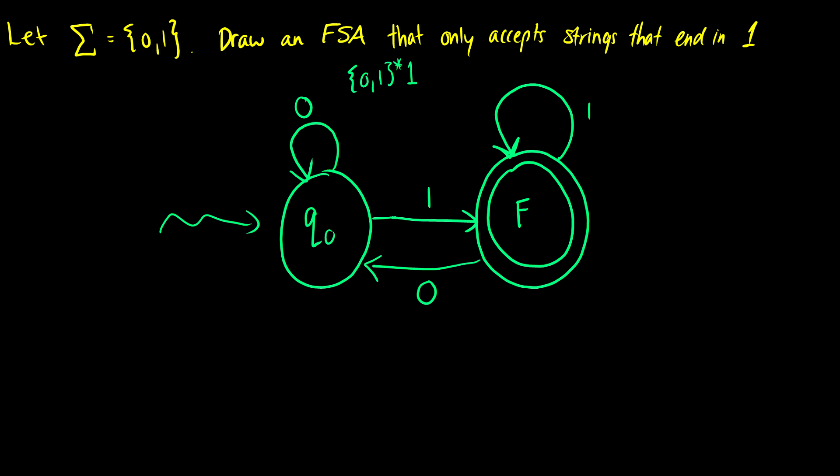Now these are the state machines I like to call the on-off state machines. So essentially if it's a 1, it's on. If it's a 0, it's off. And basically if we want to accept it, it needs to end on. So if we ever hit a 0, we go back to this off state here.